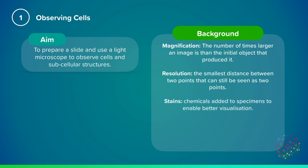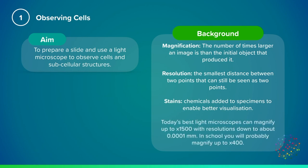Stains are chemicals that are added to specimens that are viewed under microscopes to help see the different structures better. You should remember that today's best light microscopes can magnify up to 1500 times, with resolutions down to 0.0001 millimetres. In school your microscopes might not be quite this powerful.